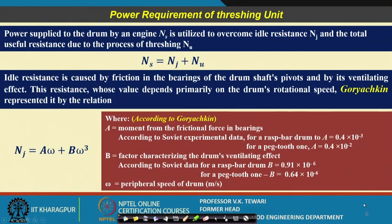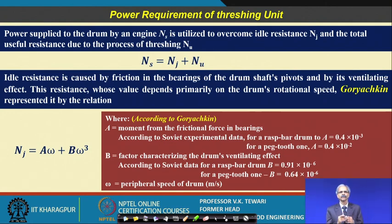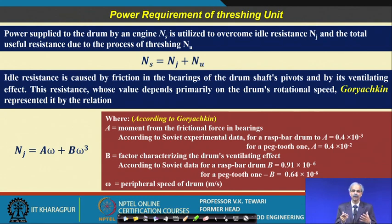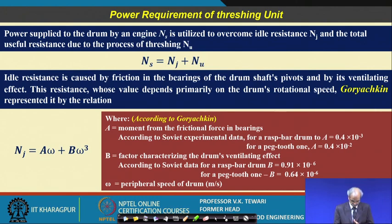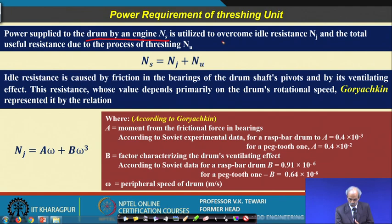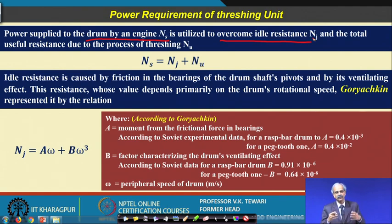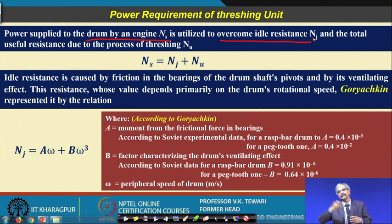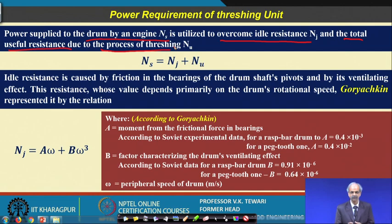Now we talk of the power requirement of the threshing unit. How much power is required, and what are the elements which require power? The power supply to the drum Ns is utilized to overcome two resistances: the idle resistance Nj — which occurs when the system starts initially — and the total useful resistance due to the process of threshing.